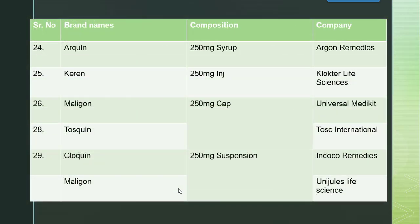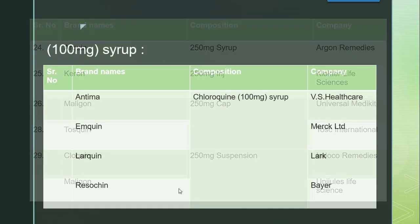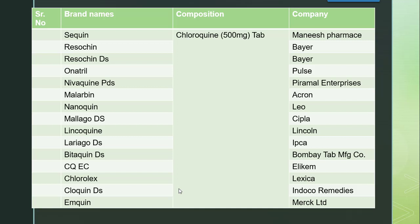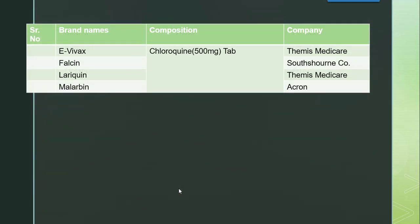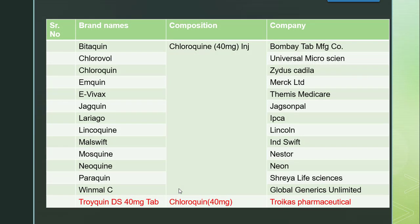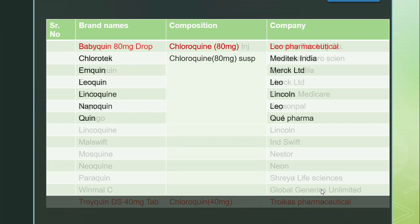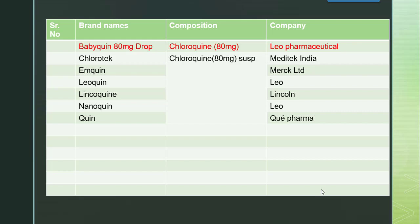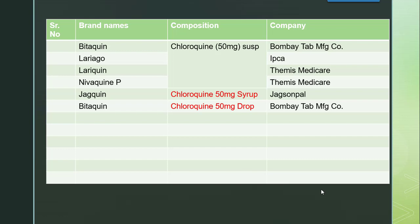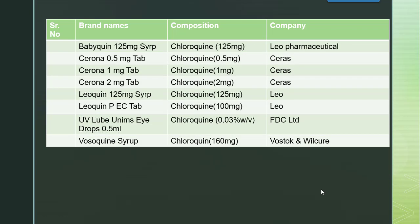Other dosage forms of chloroquine available in the market include syrups, suspensions, capsules, and injections of different strengths. There are 100 mg and 250 mg syrups. Tablets are available in 500 mg strength under many brands as well. Injections come in different strengths — 40 mg, 80 mg — with many brands available. So different strengths exist: 250 mg, 500 mg, 100 mg, 80 mg, etc.